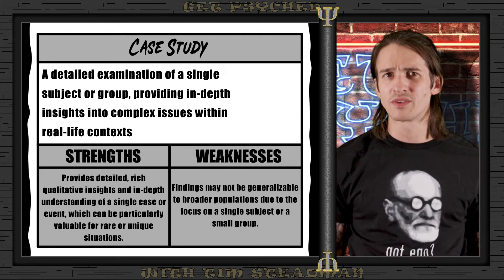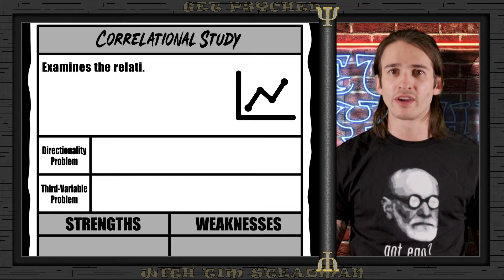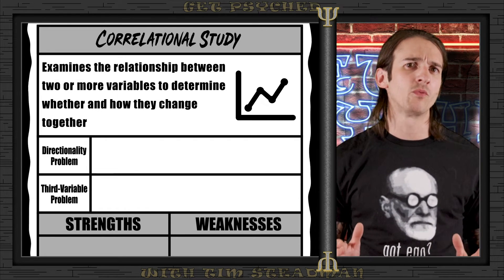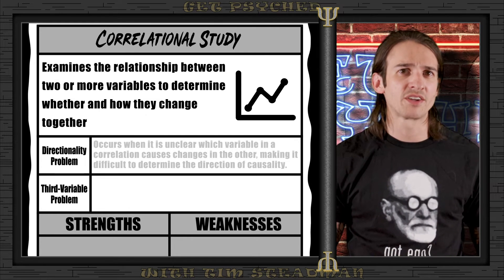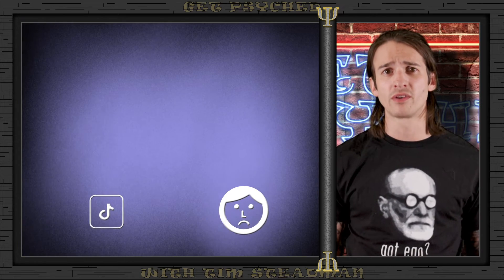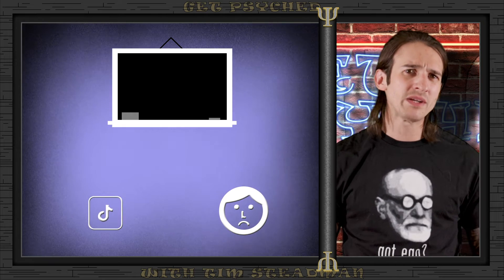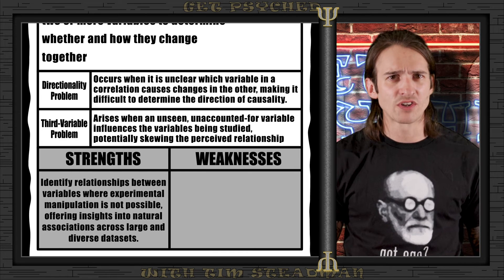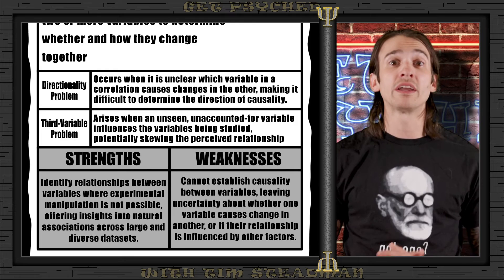Correlational studies look at the relationship between variables to determine how they might relate to one another. While they can show a connection, they can't prove one thing directly causes another — this is where the directionality and third variable problems come in. For example, a correlation between hours spent on social media and anxiety in teenagers is unclear: does social media use cause anxiety, or does anxiety lead to more social media use? A third variable like academic stress might be driving both, misleading the causal interpretation. Remember: correlation does not equal causation.